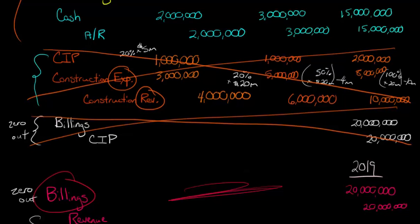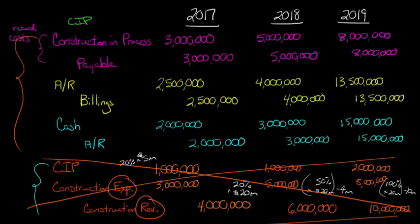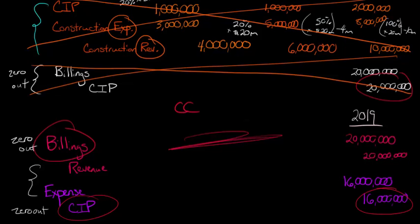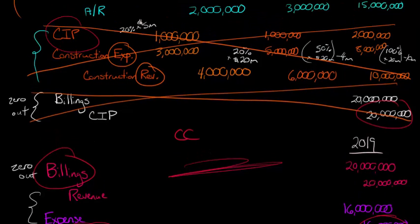Another thing to bear in mind is that the CIP account entry — that plug with the expense and revenue — is not being made under completed contract; you can think of it as the gross profit. That's why when we zero out CIP under completed contract, we zero it out at $16 million. But under percentage of completion, we were zeroing it out at $20 million, because we were adding a debit to CIP each period for the gross profit — the plug between expense and revenue — essentially the gross profit being earned on the contract.